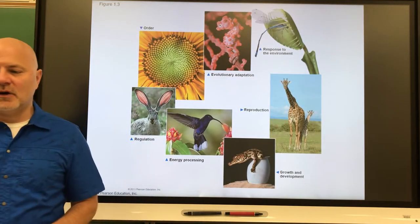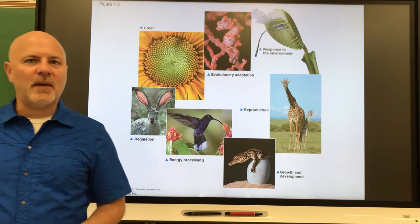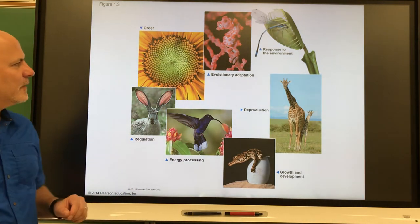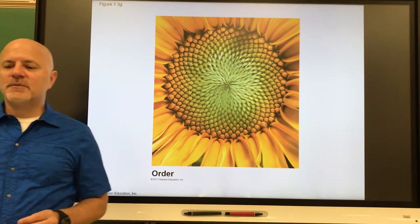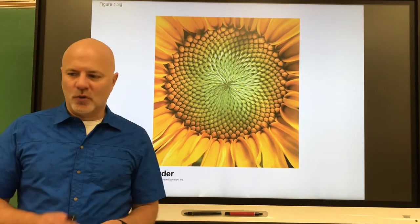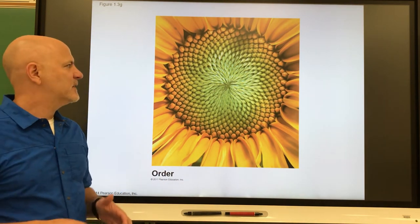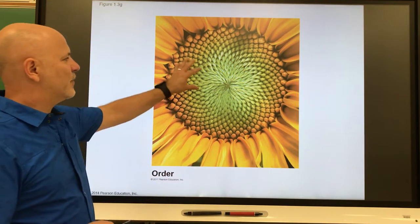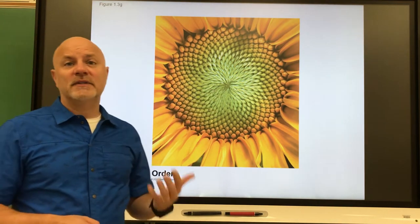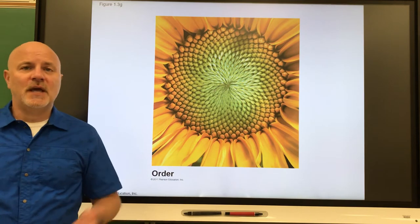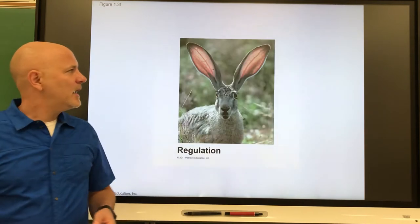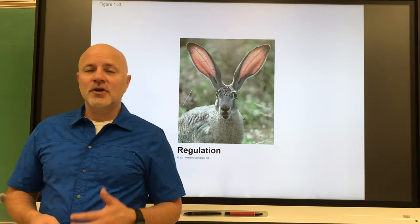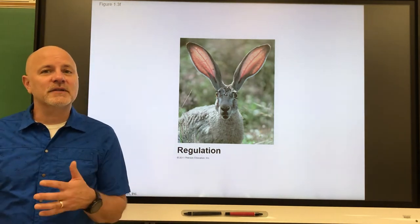Now let's look at the characteristics of life — specifically, the properties of life. The first property is that life is organized. All life exhibits a complex organization — you can see that with a sunflower, with a single-celled organism, and with us.